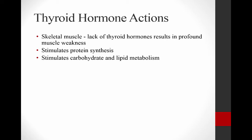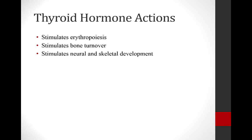We see effects on skeletal muscle. If you have a hypothyroid animal, you have profound muscle weakness, and this can manifest in many different ways, especially in hypothyroid dogs. Thyroid hormones also stimulate protein synthesis and stimulate carbohydrate and lipid metabolism. In the absence of thyroid hormone, serum can be very hyperlipidemic because lipid and carbohydrate metabolism is slowed. Thyroid hormone also stimulates erythropoiesis — in hyperthyroid cats there is sometimes an erythrocytosis, while in hypothyroid dogs you can see a normocytic, normochromic, non-regenerative anemia. Thyroid hormone also stimulates bone turnover and neural and skeletal development.